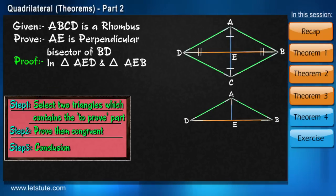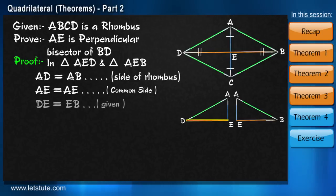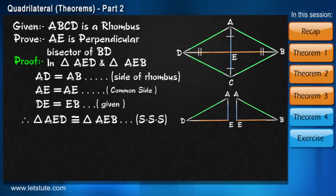Now the second step. As we all know that we will prove them congruent first. So in these two triangles, AD is equal to AB. AE is the common side. And DE is equal to EB, which is the given part. So by SSS criterion triangles are congruent.